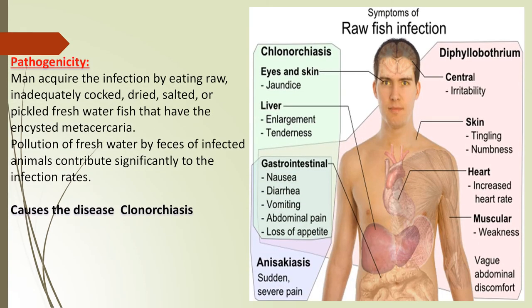Regarding pathogenicity, humans acquire infection by eating raw, inadequately cooked, dried, salted or pickled freshwater fish that contain encysted metacercaria. Pollution of freshwater by infected fish or infected animals also contributes to the infection rate. It causes a disease named clonorchiasis. Symptoms of raw fish infection include jaundice visible in the eyes and skin.